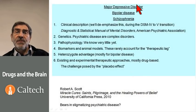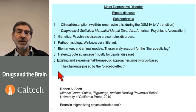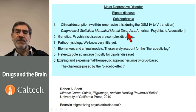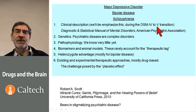We will be discussing major depressive disorder, bipolar disease, and schizophrenia in that order. And as usual, we will go through our six-part description of the diseases. We will treat clinical descriptions a bit more cursorily than usual because the Diagnostic and Statistical Manual of Mental Disorders — the Diagnostician's Bible — is undergoing a transition from the fourth to the fifth edition, and there will be some changes over the next year or so in the definitions of psychiatric diseases.